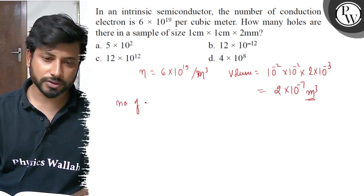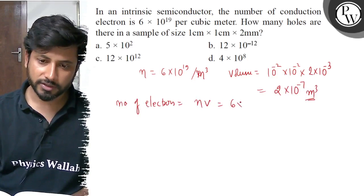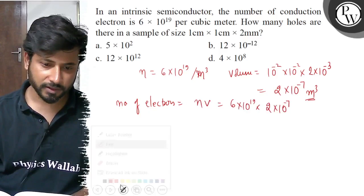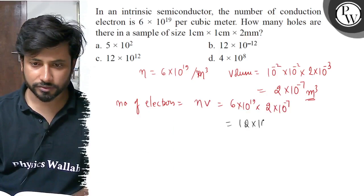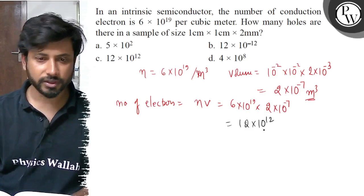So, number of electrons in the sample, n into volume. N is 6 into 10 to the power 19 and volume is 2 into 10 to the power minus 7. When we calculate, we get 12 into 10 to the power 12.